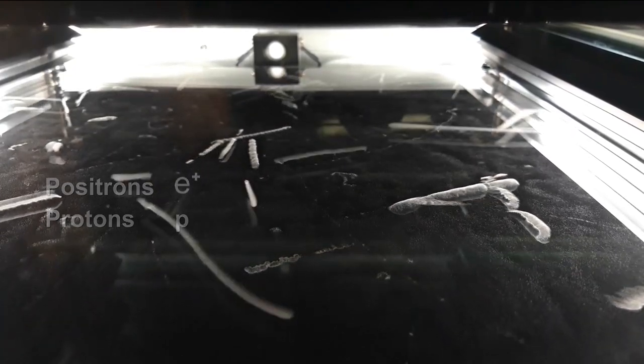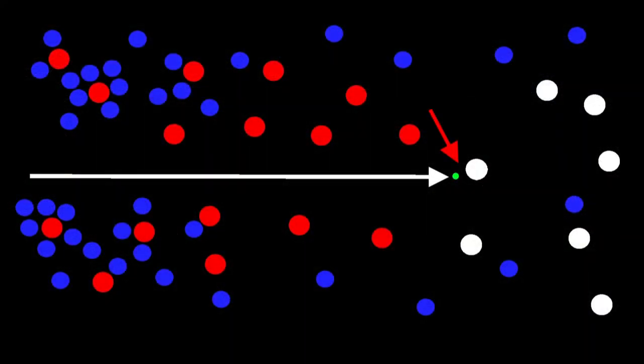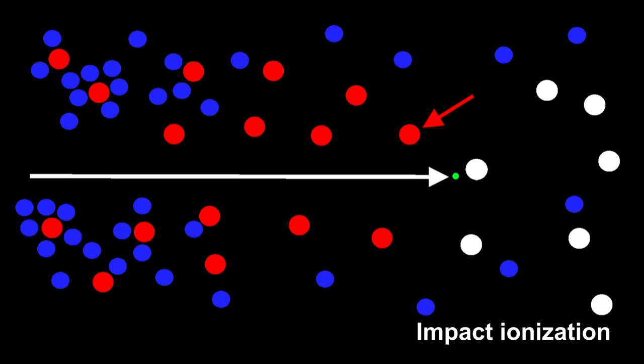The tracks are formed because the particles collide with atoms and molecules from the air, knocking off electrons and leading to the formation of ions. This is called impact ionization. The ions then act as condensation nuclei because they attract the molecules of the alcohol. This leads to the formation of droplets in the supersaturated air and traces are formed along the trajectory of the charged particle.